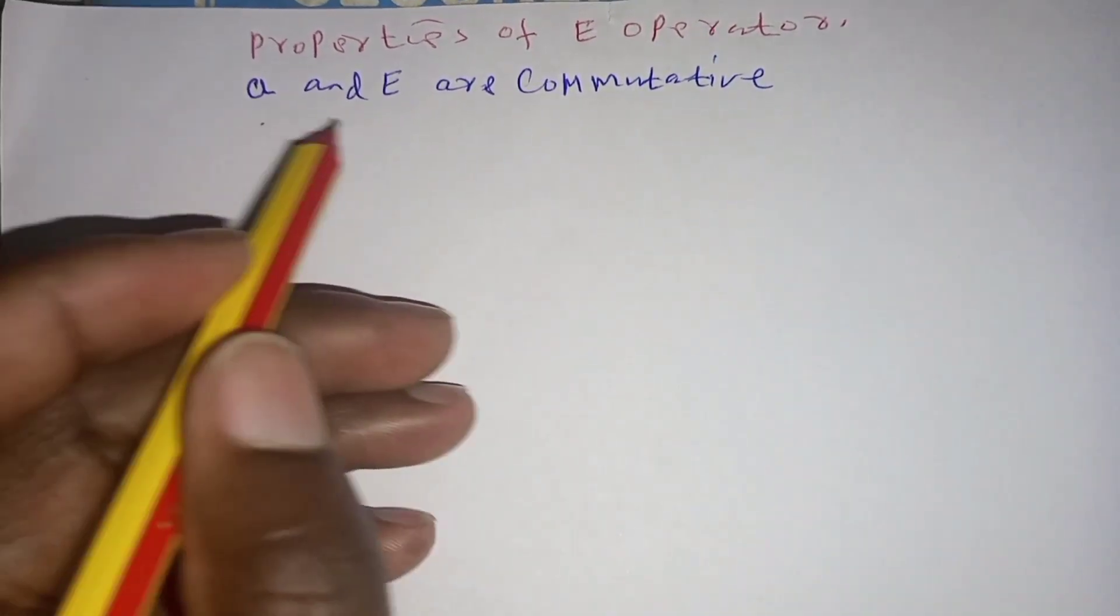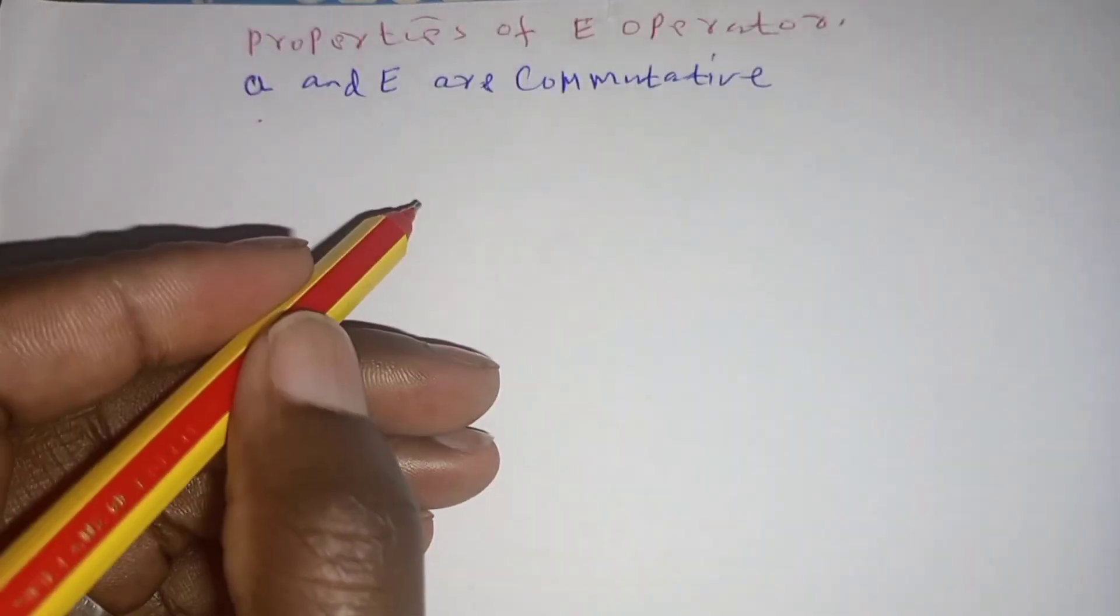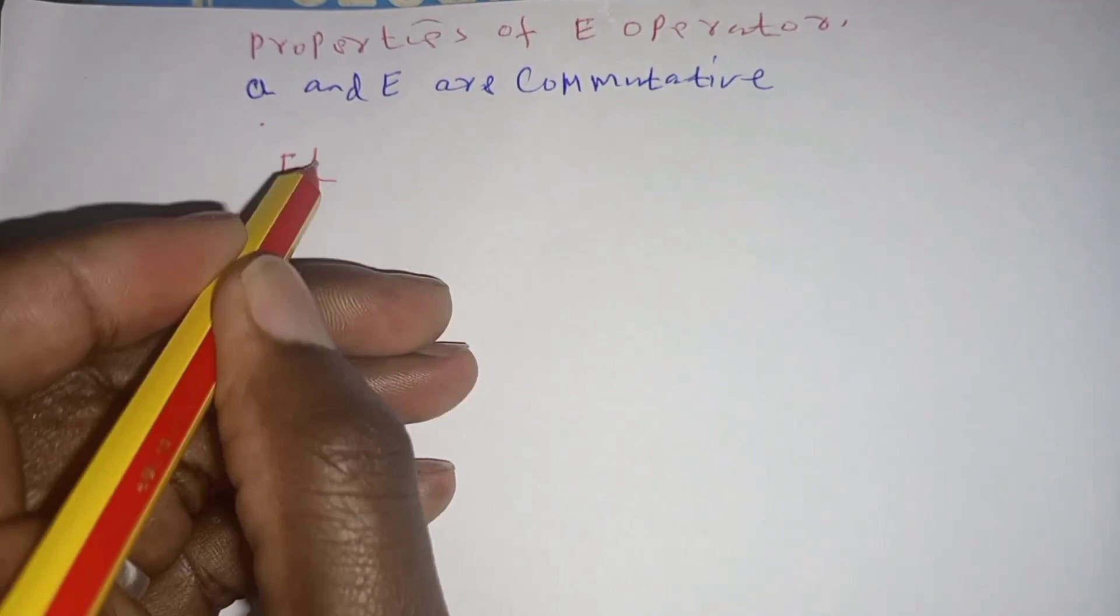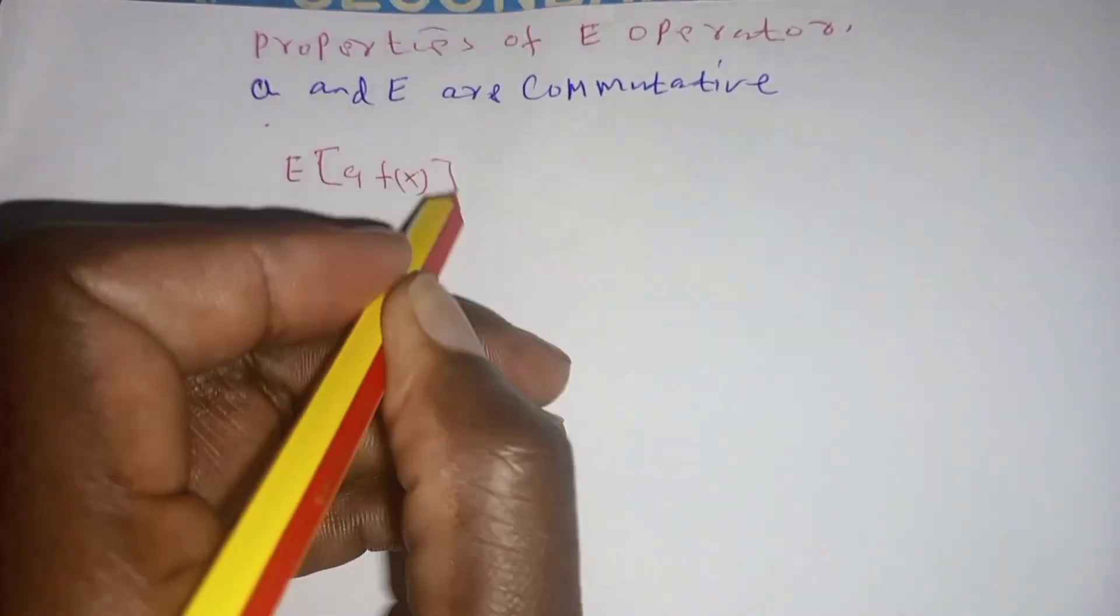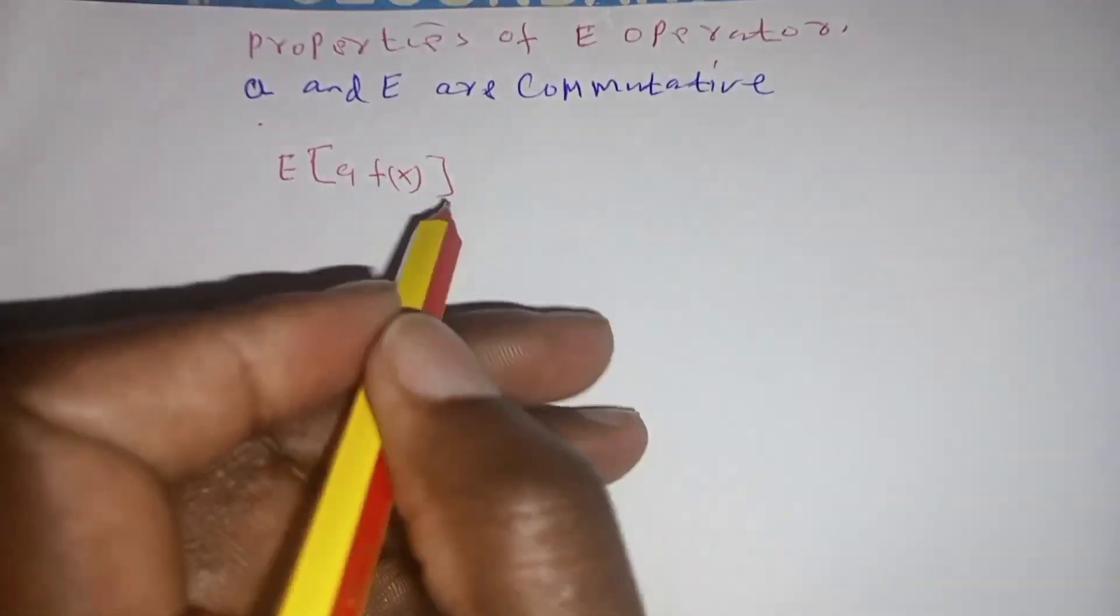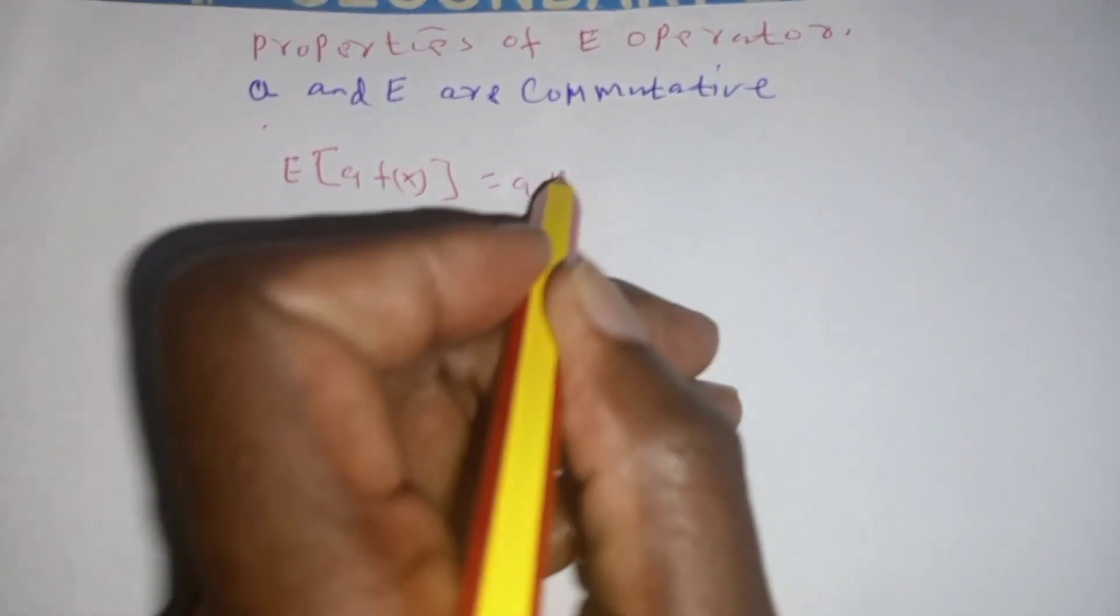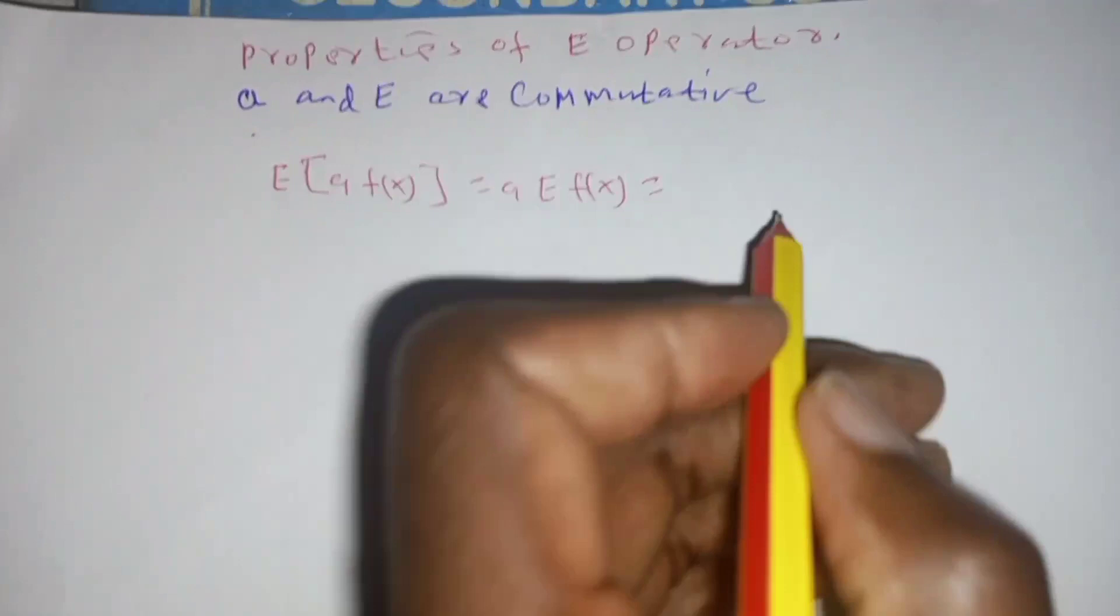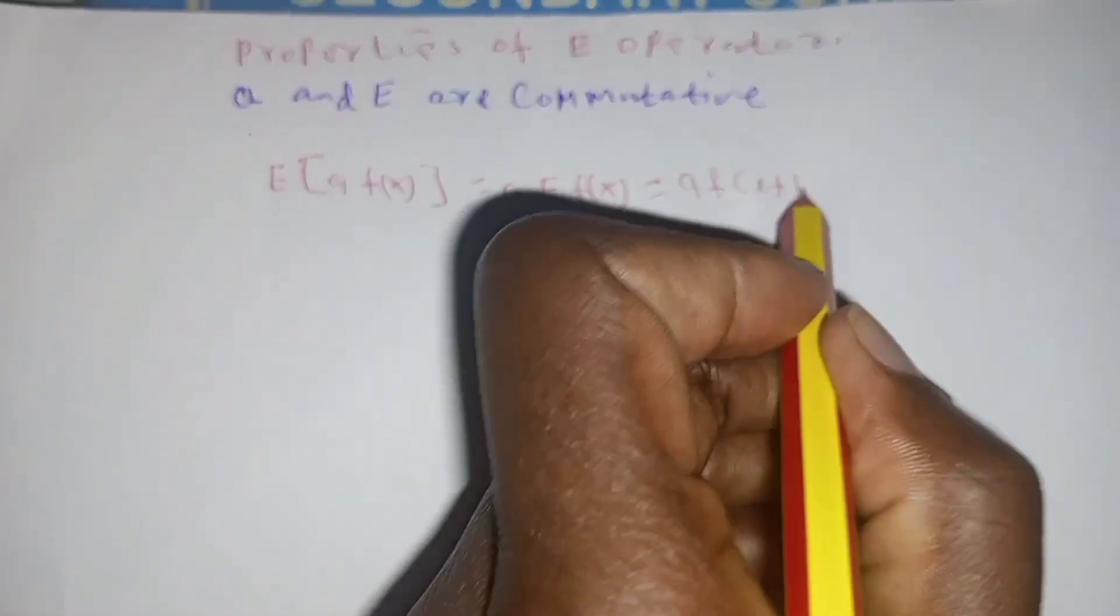Constant A and the script operator E are commutative. To do that, we do the following. The operator E of A f of x, whereby A is the constant, is equal to A times the shift operator of f of x, which is equal to A f of x plus h.